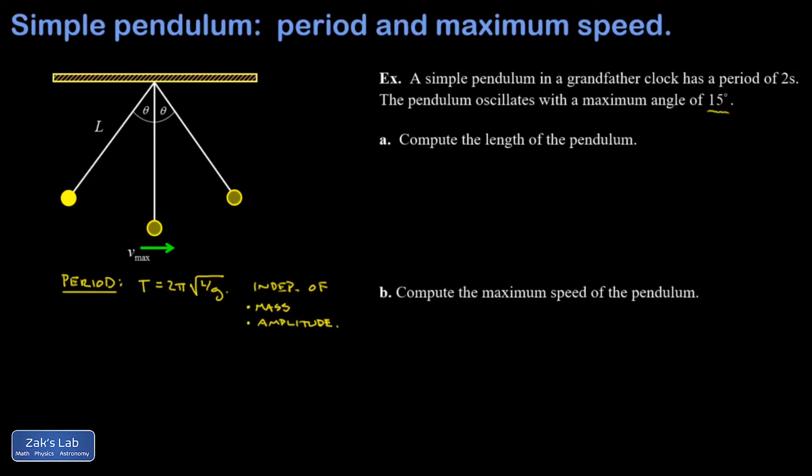Again, that's only true as long as the amplitude stays relatively small. If you go to enormous angles like 45 degrees or 60 degrees, then you'll start to see deviations from this simple behavior.